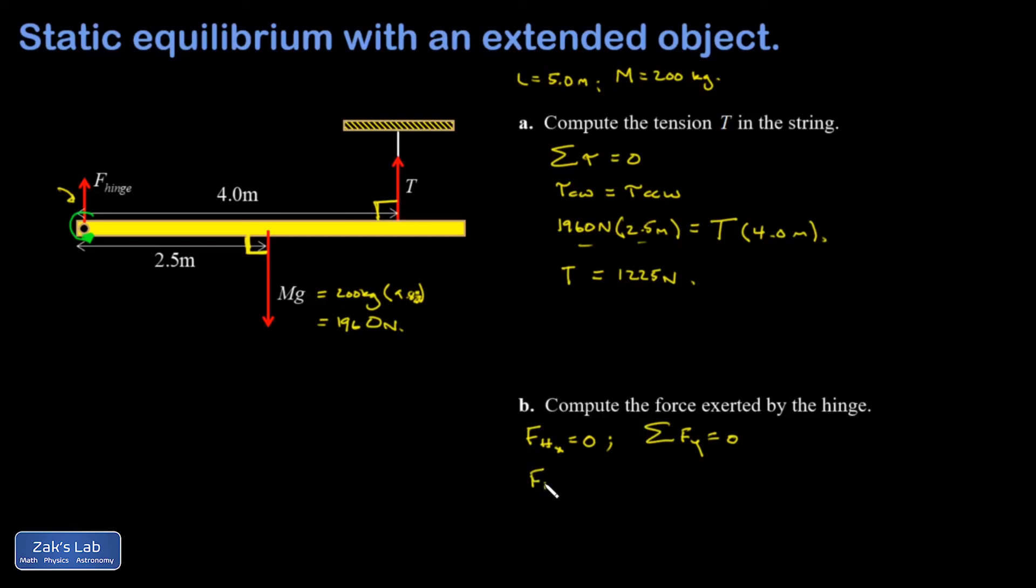So I have the hinge force y component plus the tension, also pointing up, equals mg pulling down. This will guarantee that I have balance in the y direction so I won't end up with a y acceleration. So the hinge force in the y direction is going to be mg minus T: 1,960 minus 1,225, and I get the force exerted by the hinge as 735 newtons.